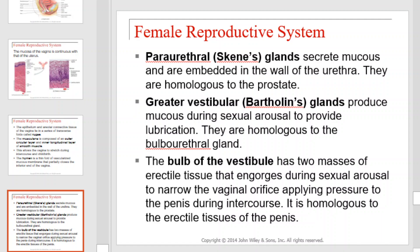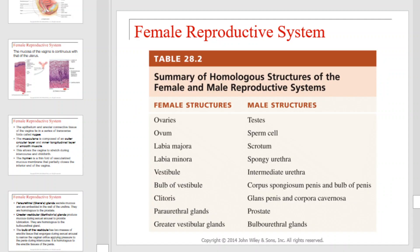Skene's glands secrete mucus and are embedded in the wall of the urethra. They are homologous to the prostate. Bartholin's glands produce mucus during sexual arousal to provide lubrication. They are homologous with the bulbourethral gland. The bulb of the vestibule has two masses of erectile tissue that engorge during sexual arousal to narrow the vaginal orifice, applying pressure to the penis during intercourse. This is homologous to the erectile tissues of the penis. This table will provide a summary of the homologous structures of the female and male reproductive systems.